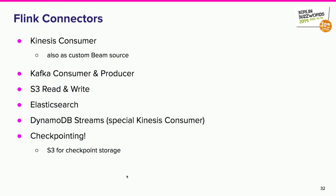Now integrations — the pieces that help you get data into your streaming application and write it out: sources and sinks in Beam. We are using Flink's connectors even in Beam, because we did the work once to make those really work inside Lyft. We have exposed the Flink Kinesis consumer as a Beam source in our Beam fork, and we are planning to do the same for consumer and producer. This is also for all Java pipelines — we use the same set of connectors. We need to read from Kafka, write to Kafka, read and write to S3, write to Elasticsearch, and consume from DynamoDB streams. And very importantly for Flink: checkpointing, where the checkpointed state is written to S3.